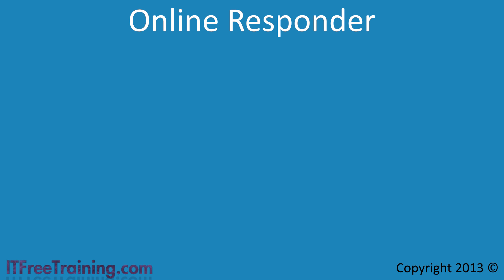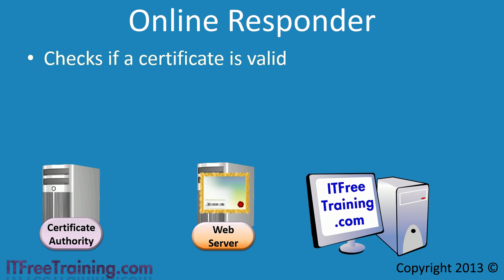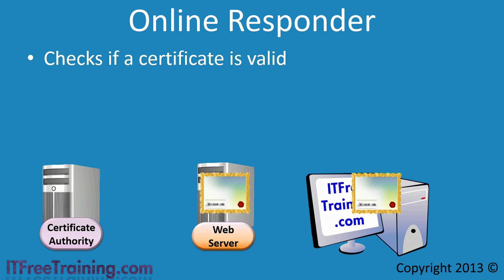The next component is the Online Responder, whose job is to check if a certificate is valid. To understand how an online responder works, consider what happens when you do not have one. In this example, a certificate authority has issued a certificate to a web server. It is later realized this was a mistake and the certificate needs to be cancelled — or in certificate terminology, revoked. So when this certificate is presented to a client computer, how does the client know this certificate is not to be used? In order to do this, the certificate authority creates a certificate revocation list, or CRL.